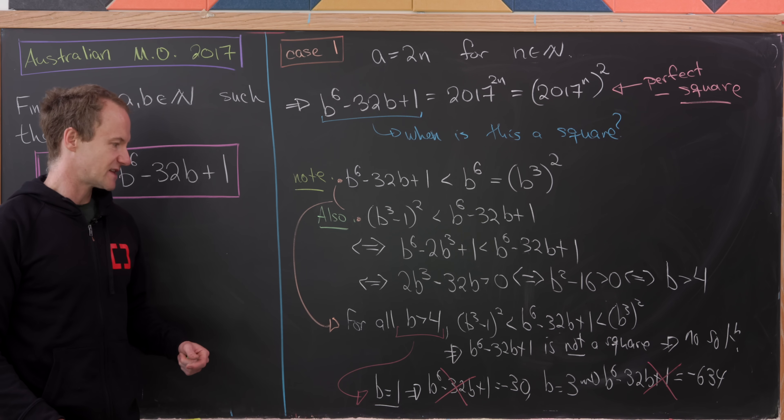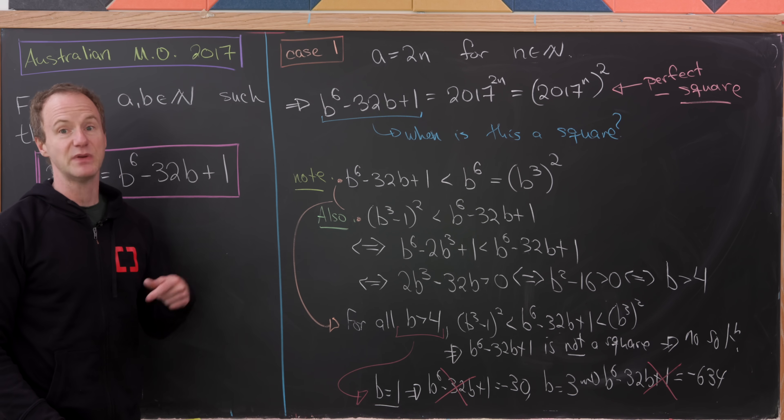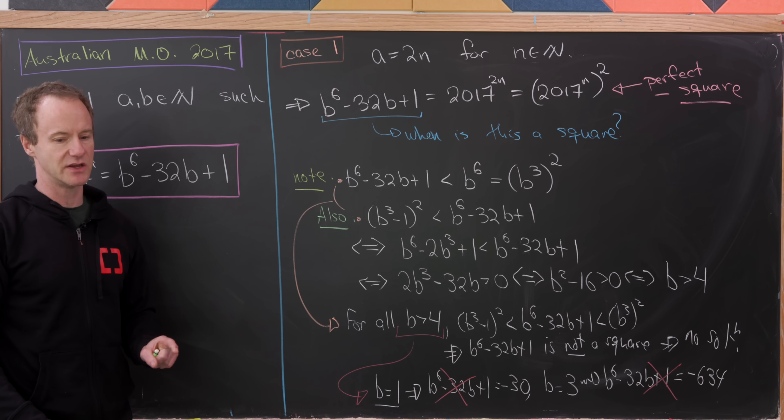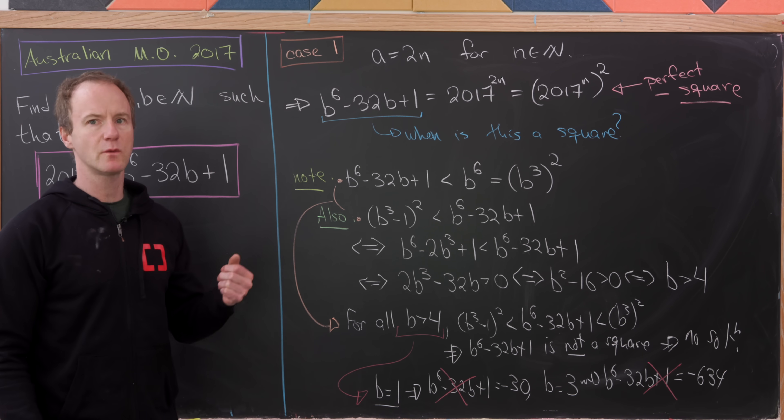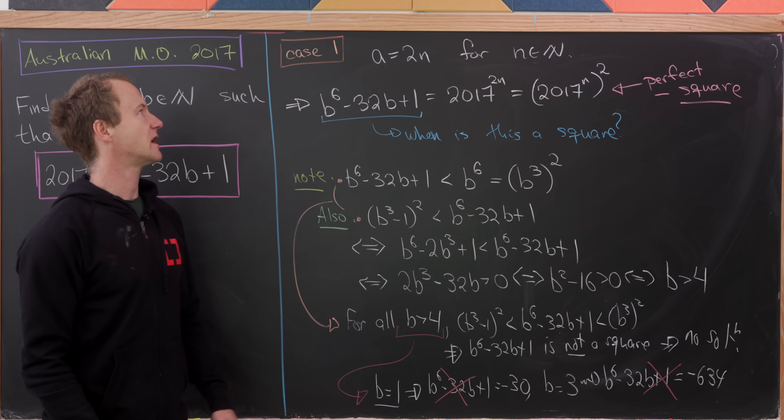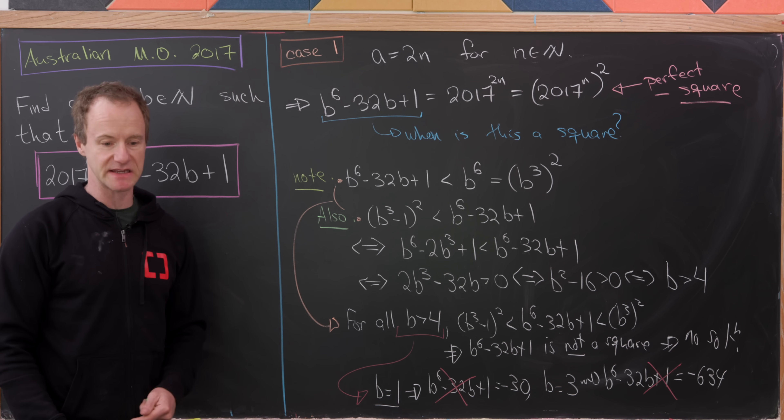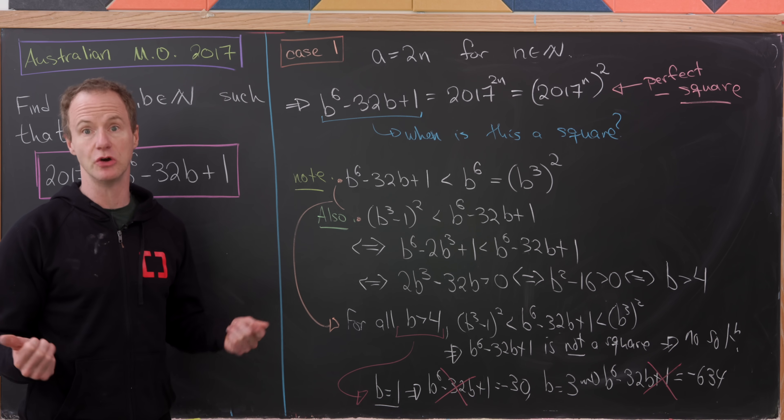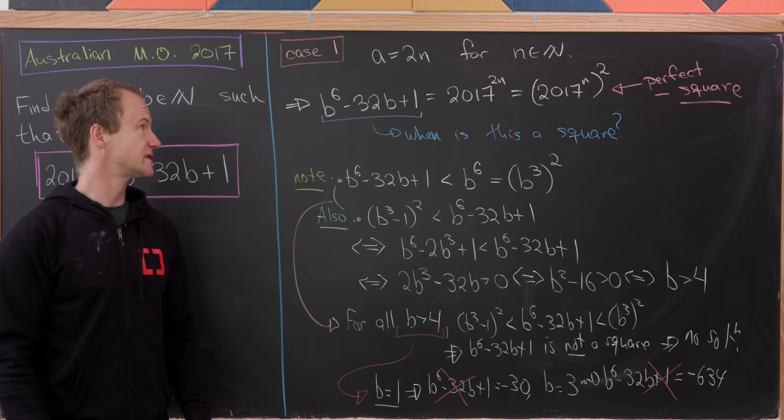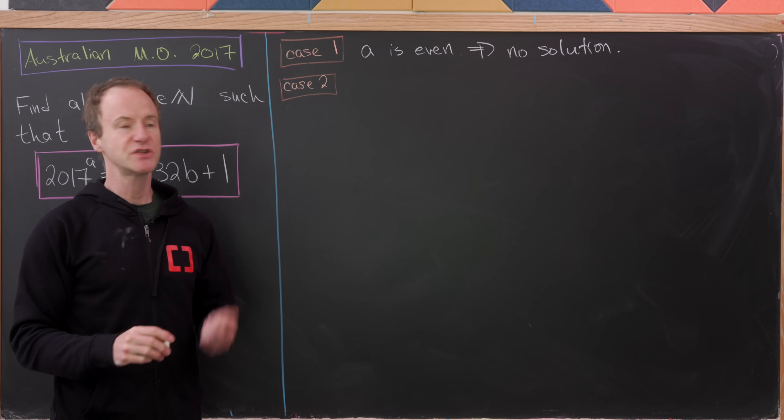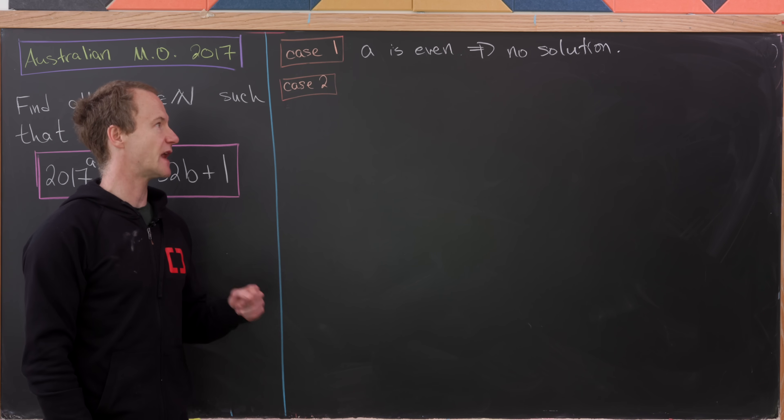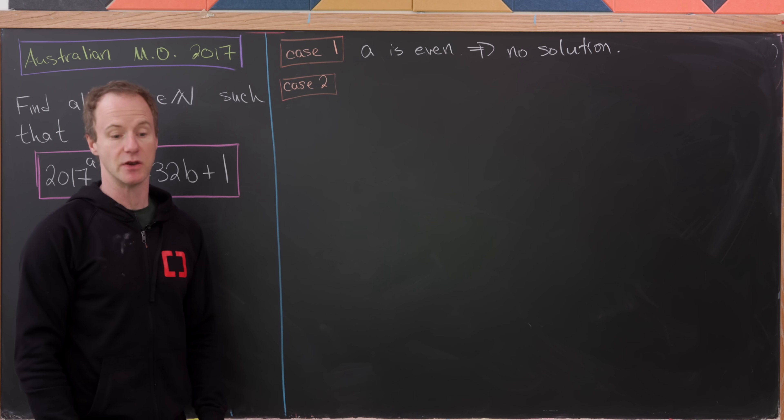And then all that's left is to check the case when B is equal to 4. But I'll let you do that on your own. Which means that we've sorted out everything in this first case when A is an even number and found that there is no solution. So let's move on to the case when A is odd.